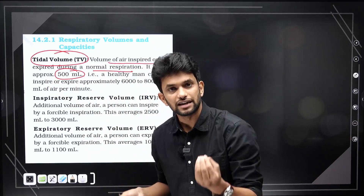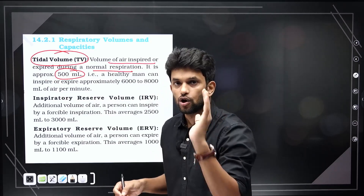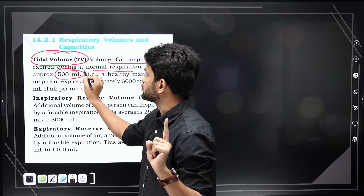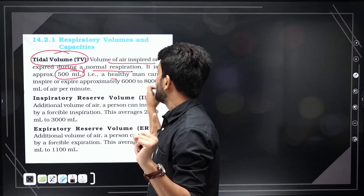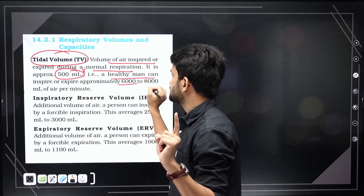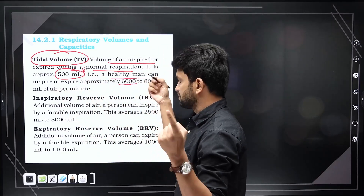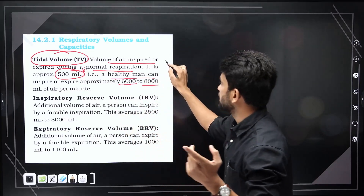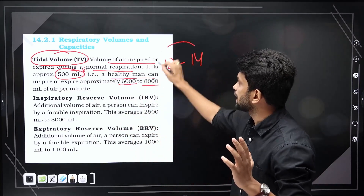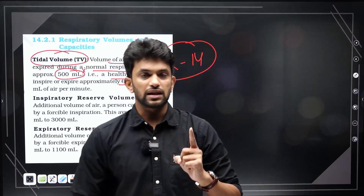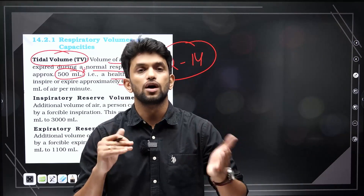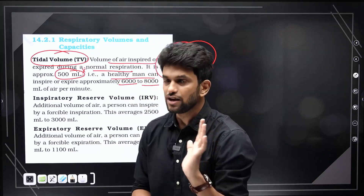Tidal volume is approximately 500 ml. A healthy man inspires and expires about 6,000 to 8,000 ml per minute. We breathe about 12 to 14 times, and each breath is about 500 ml.